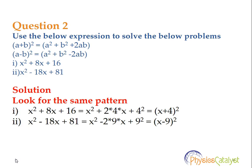Now let's take a look at the solution. We need to use the algebraic identities and look for the same pattern. So x squared plus 8x plus 16 can be written as x squared plus 2 into 4 into x plus 4 squared. Here a is equal to x and b is equal to 4, so we can write it as x plus 4 whole squared.